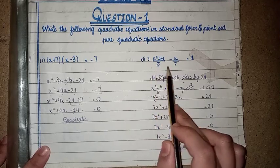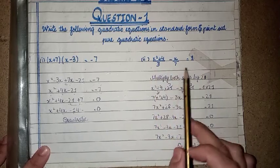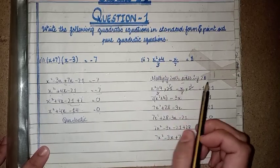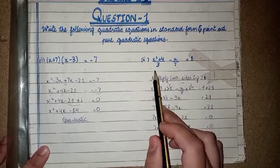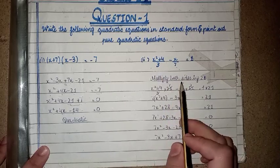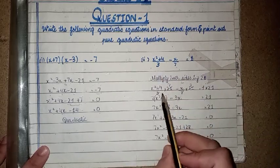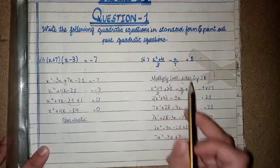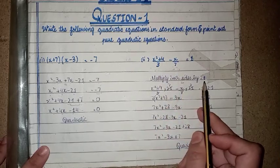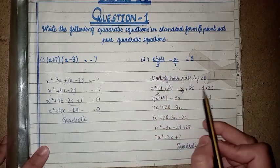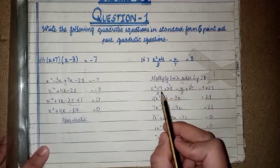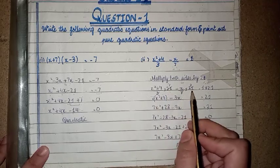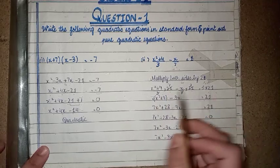The second question is x² + 4 = 3 - x/7 equals 1. We multiply through: x² + 4x minus x over 7, multiplied by 21 equals 1 times 21. Three times 7 gives us the terms we need.